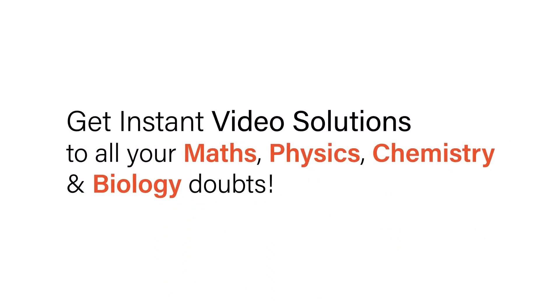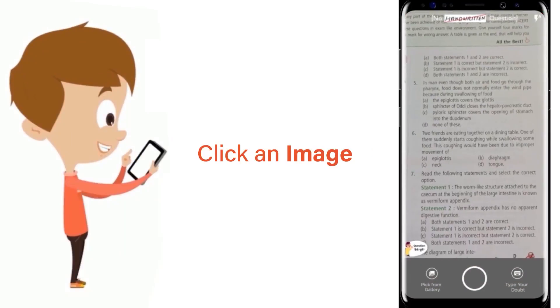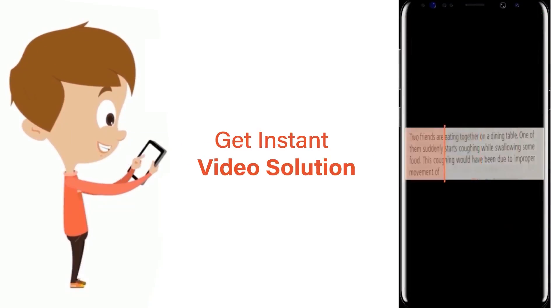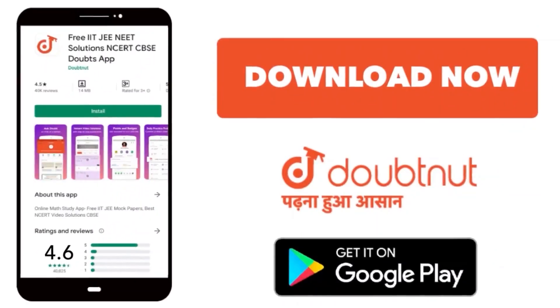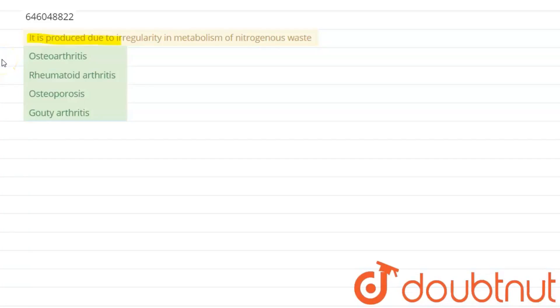With Doubtnet, get instant video solutions to all your math, physics, chemistry, and biology doubts. Just click the image of the question, crop the question, and get instant video solution. Download Doubtnet app today. The question is: it is produced due to irregularity in metabolism of nitrogenous waste.